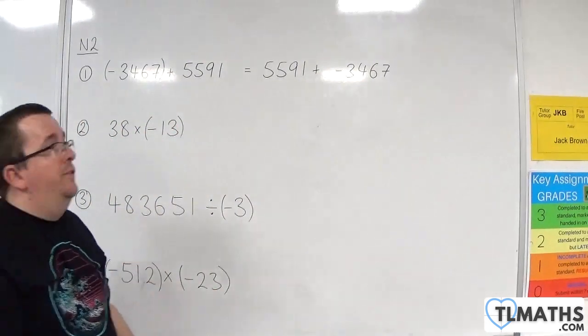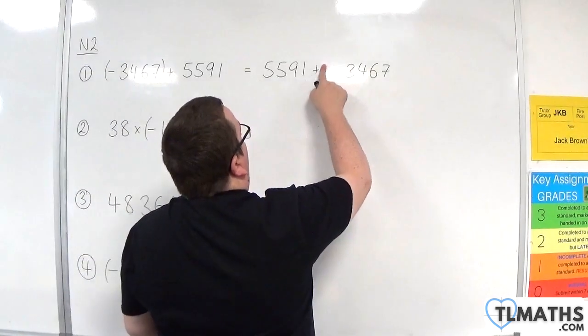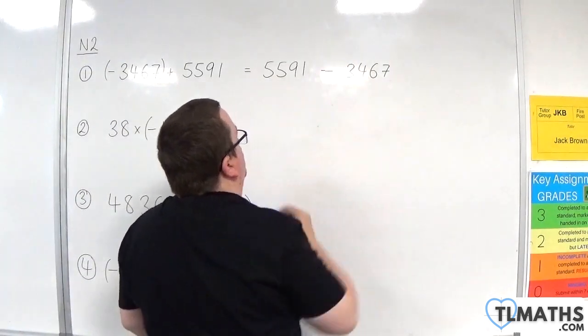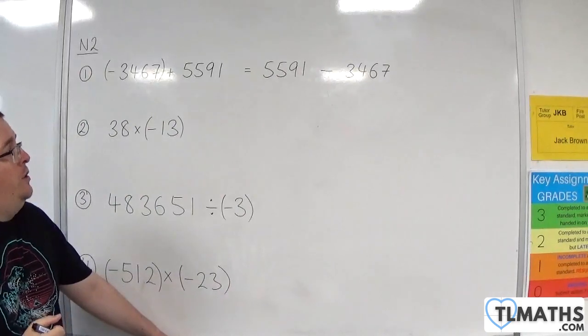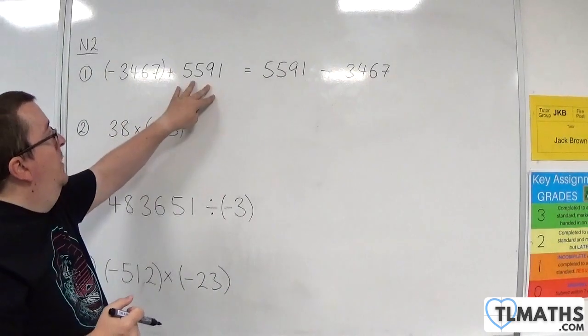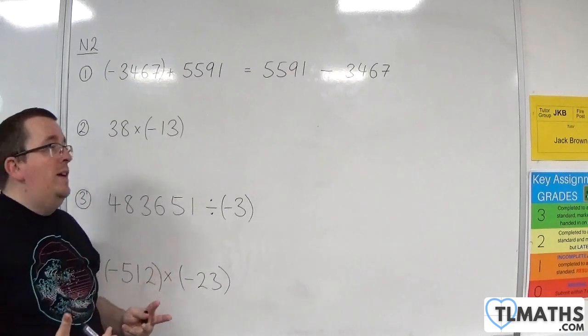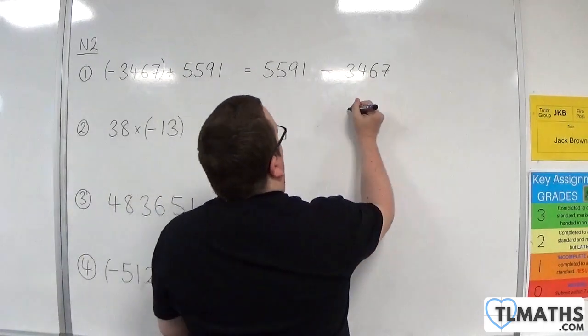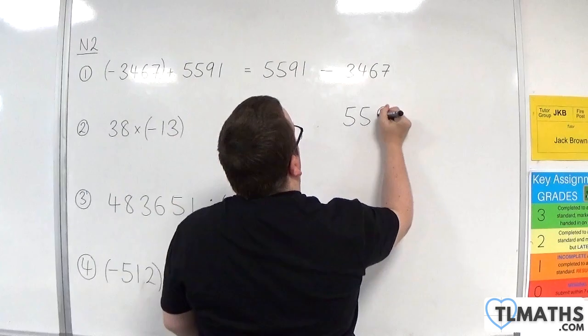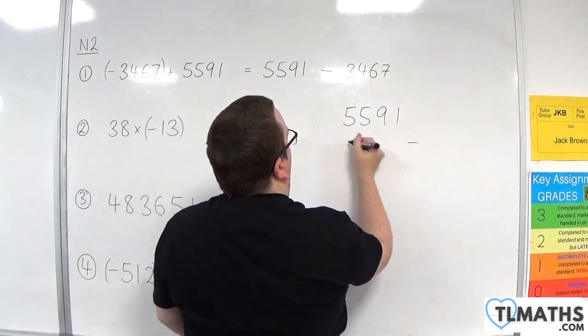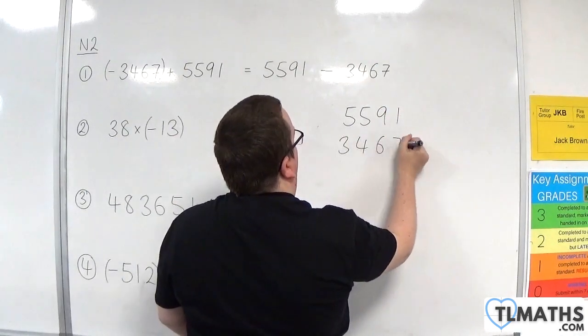All this means is that I've got 5,591 plus the negative 3,467. And when you're adding a negative, that is the same as subtraction. So actually, this problem can be made easier by just rearranging and subtracting. So, 5,591 take away 3,467.